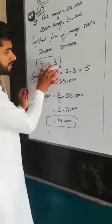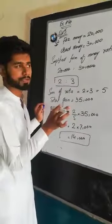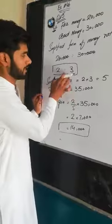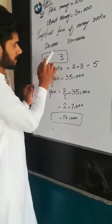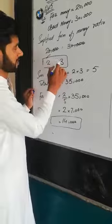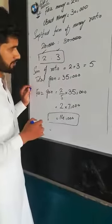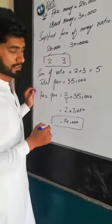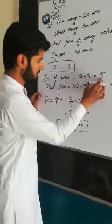Now these ratios are made — last time we made question number 3 with the same pattern. The ratio 2 to 3 is made, so 2 parts and 3 parts are distributed among the profit. The sum of the ratio is 2 plus 3, which equals 5.